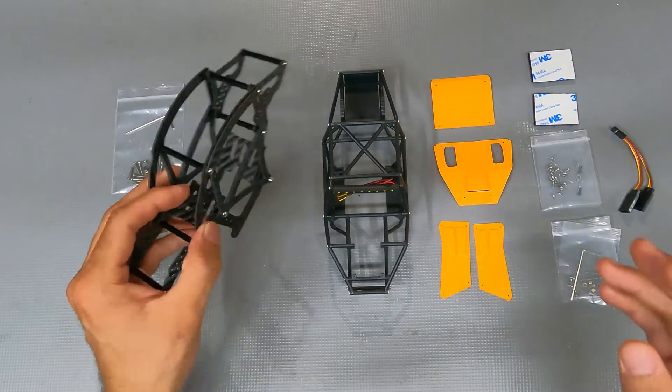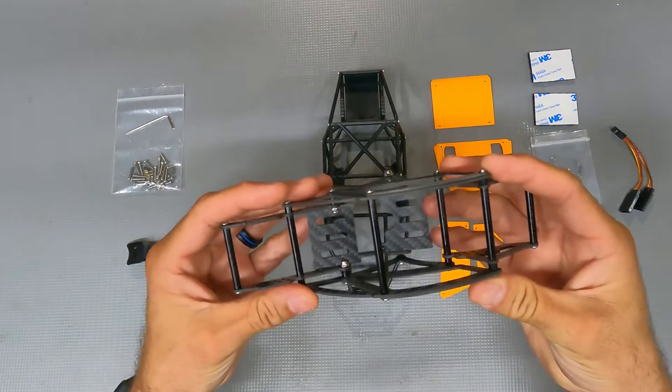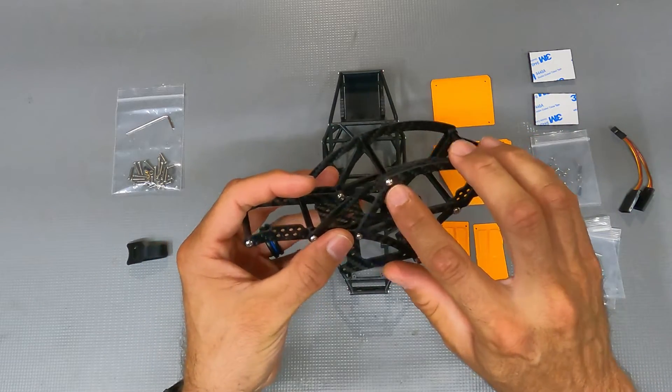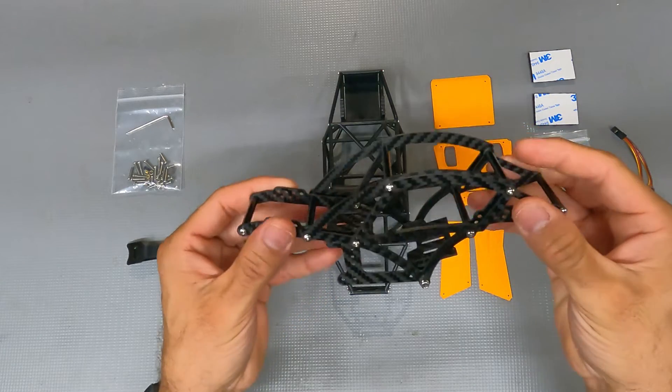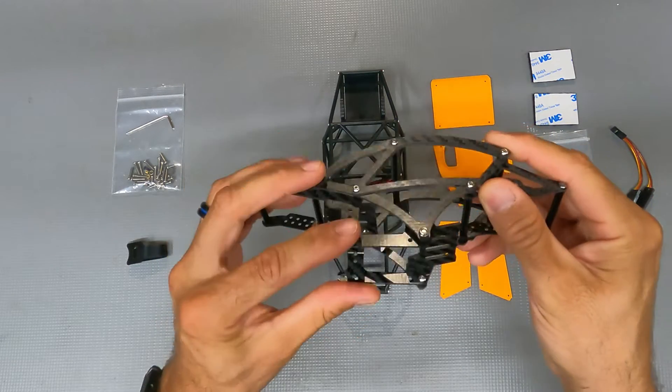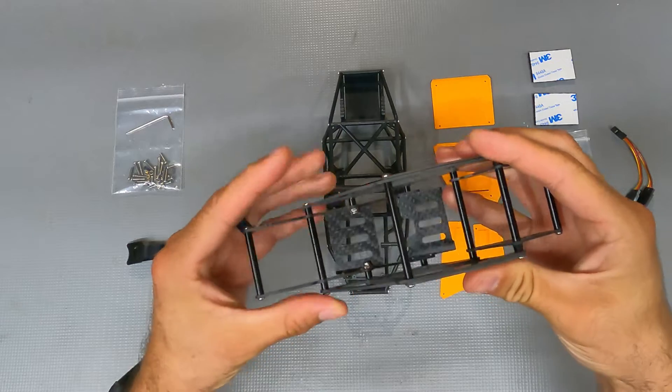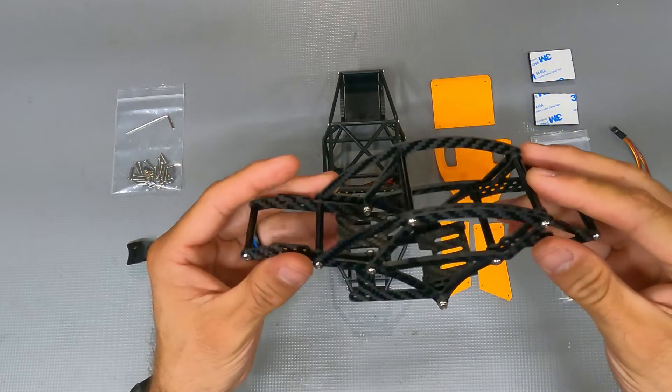We'll start off the pros and we'll do the Kangaroo. So the Kangaroo is all carbon fiber. It comes with a very nice set of stainless button heads that thread into metal rods, which is very nice. It's very stiff. It's an extremely stiff chassis all the way around. I really like it. Very nice looking carbon fiber.